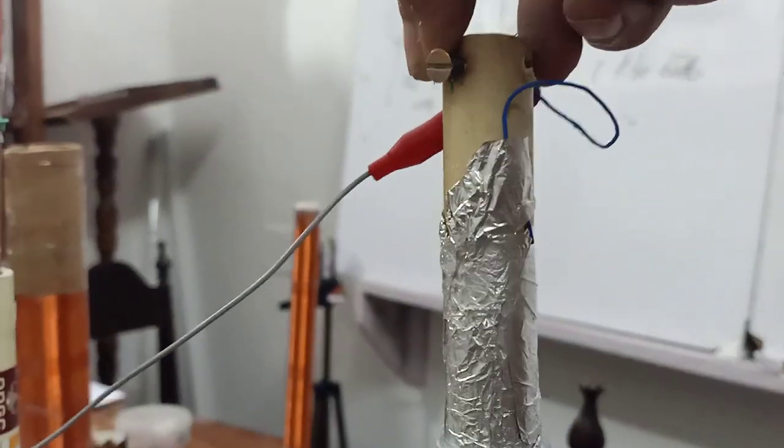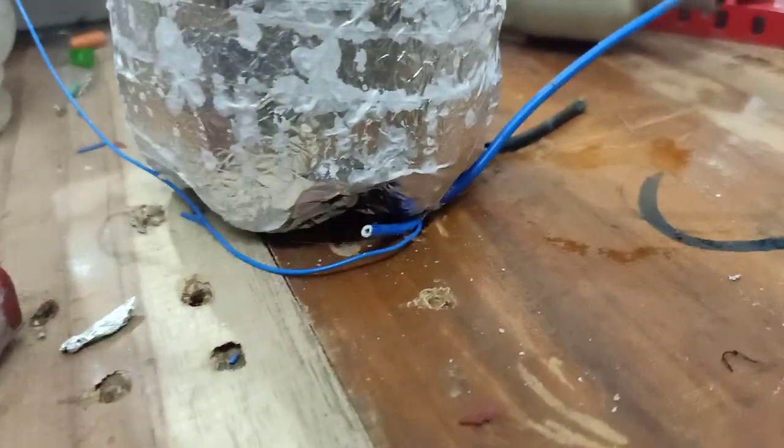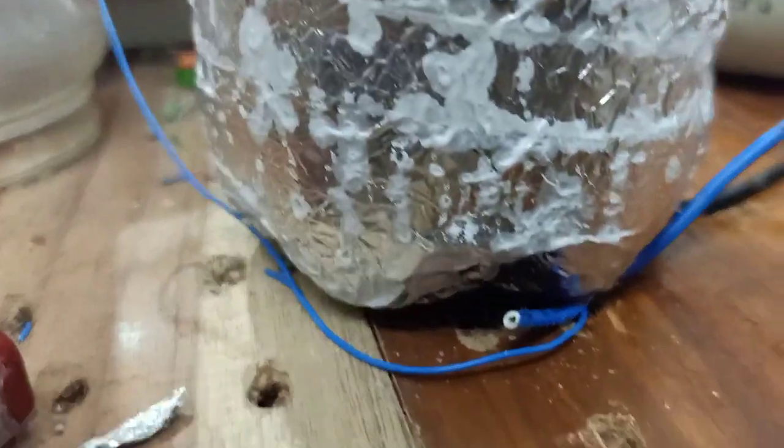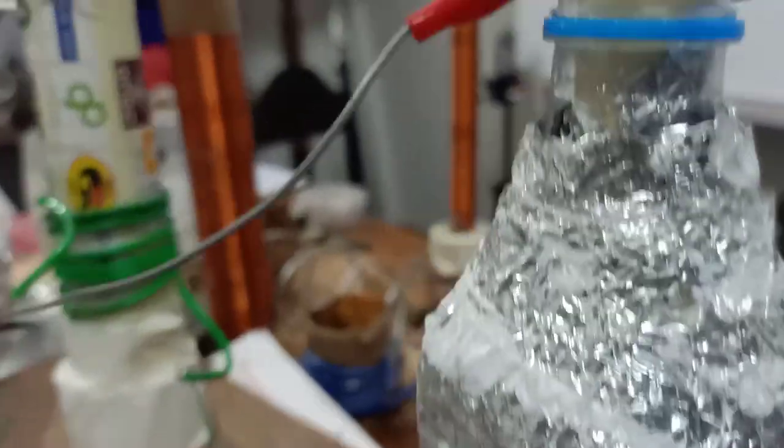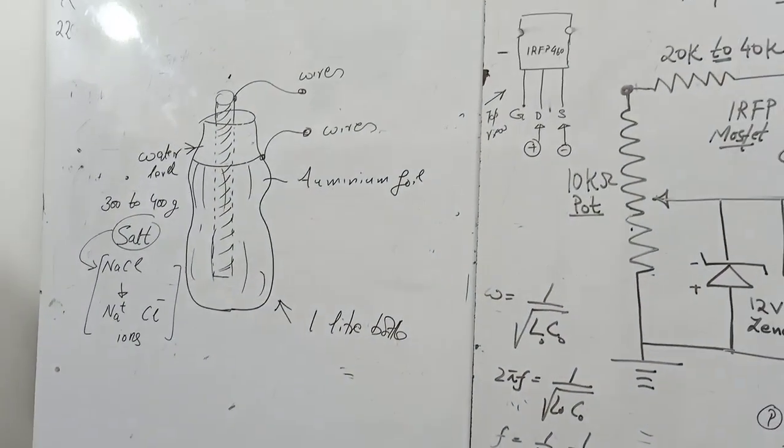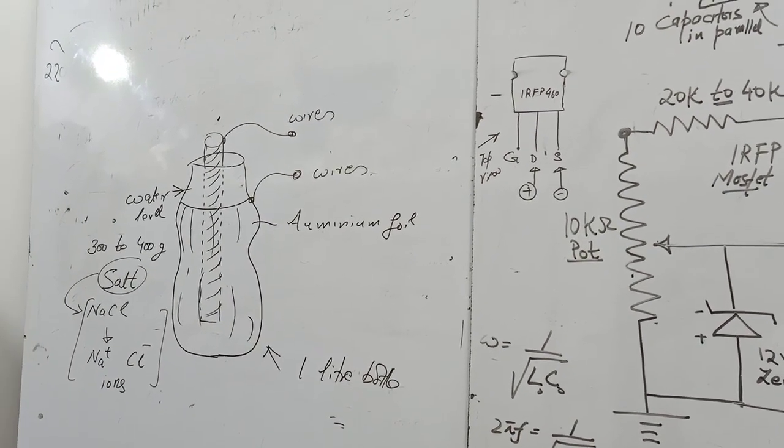There is a wire connected to the inner foil and a wire connected to the outer foil at the bottom level, because the aluminum foil goes up to the bottom. The bottle is filled with salt water, sodium chloride, because it has Na+ and Cl- ions.